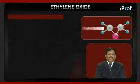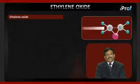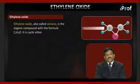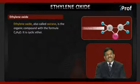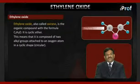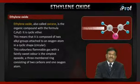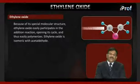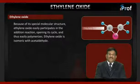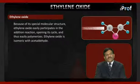We are starting the new compound ethylene oxide, also known as oxirane, which is the organic compound with the formula C2H4O. It is a cyclic ether, composed of two alkyl groups attached to an oxygen atom in a cyclic shape. This colorless, flammable gas with a faintly sweet odor is the simplest epoxide — a three-membered ring consisting of two carbons and one oxygen atom.